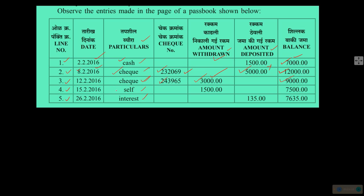Here is something different — the particular is 'Self'. Nothing is mentioned in the cheque number column, and 1,500 appears under withdrawal. This refers to a cash withdrawal where you put up a request to get money from the bank for yourself — 1,500 rupees. It is not paid to anyone else; 'Self' is written, and since it is not done by a cheque, no cheque number is given. So you went to the bank and withdrew cash.